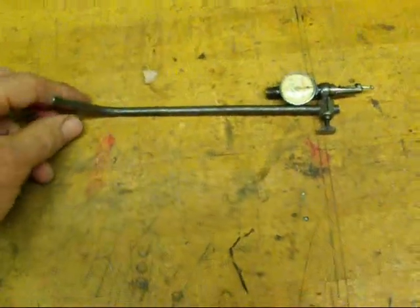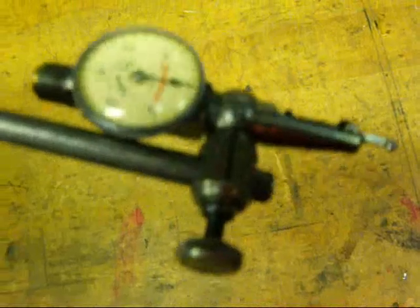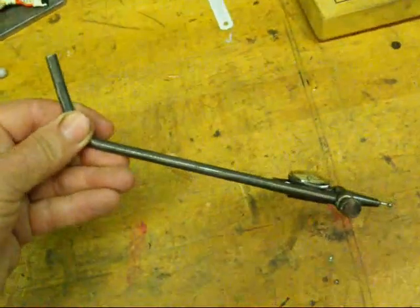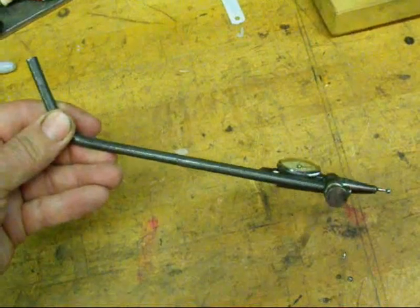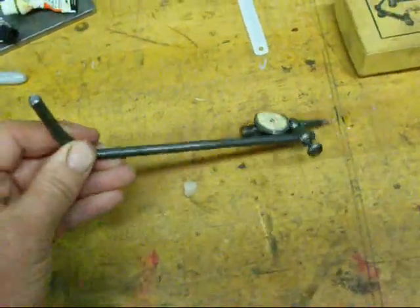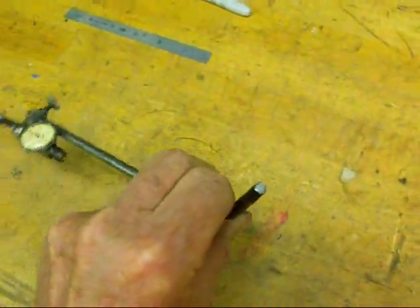A cheap and easy one to use is your Starrett last word indicator which has always been one of my favorite indicators, and all you need is a bent quarter inch rod about 10 inches long and bend it at about the eight inch mark and that can be held in the collet and swept around one direction or the other.